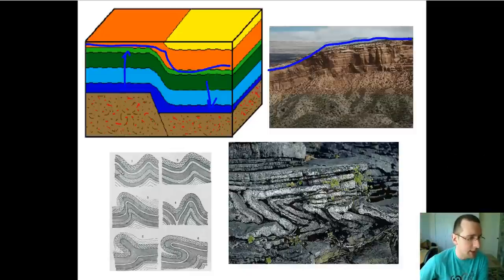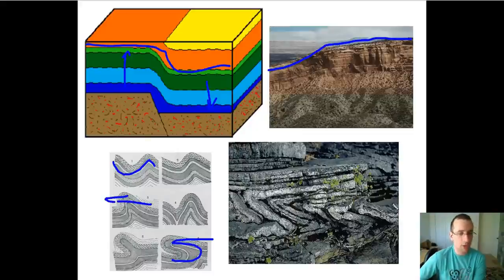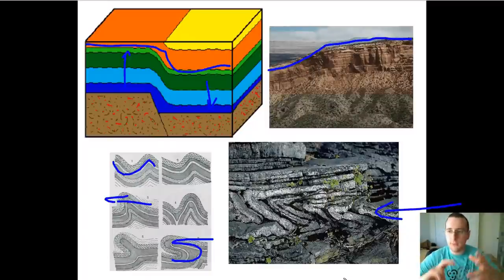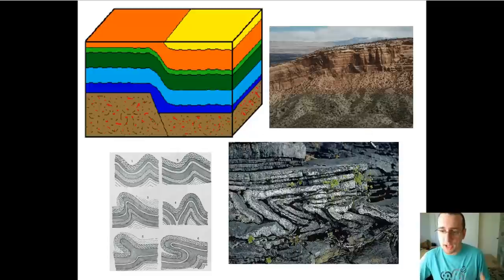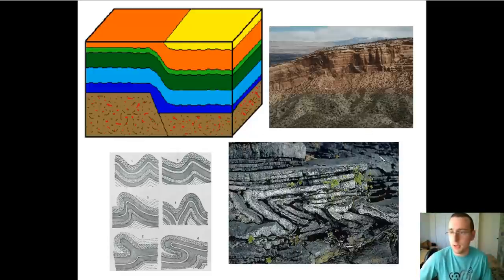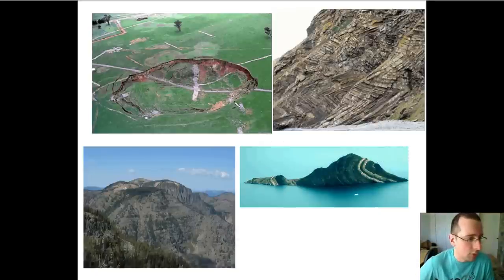Another kind of fold is the overturned fold, where a syncline or anticline region gets shifted towards the side, creating a fold that looks like that — as you can see in this picture. These are variations of what we talked about with synclines and anticlines. Some more advanced fold examples include domes and basins. The basin is when a three-dimensional fold has all pieces folding inwards toward the center into the ground.